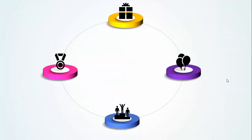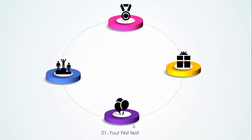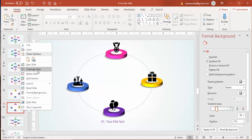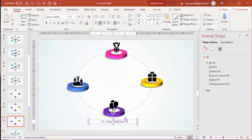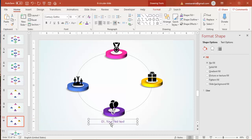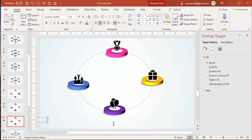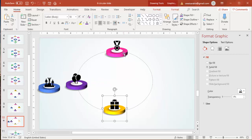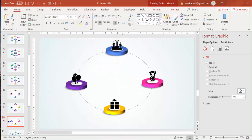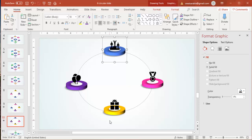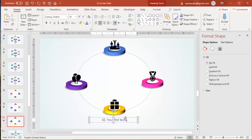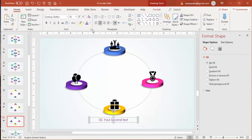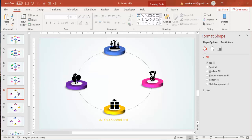If I play this now, when I click the circles move and the text appears. Then I'll duplicate the slide again. On the new slide, move the text out of the slide, rearrange the circles for the next option, then paste the text for option two and say 'your second text,' changing the color to orange.